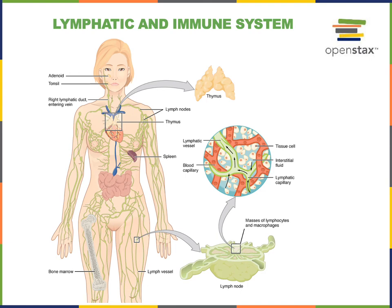Any lymphoid organ or lymphoid tissue is a cluster of leukocytes contained within a connective tissue framework. Typically there is a loose reticular connective tissue framework where the leukocytes are found, and this is surrounded by a capsule of fibrous, dense connective tissue.